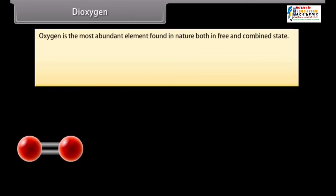Dioxygen. Oxygen is the most abundant element found in nature both in free and combined state. Nearly all rocks, clays and many minerals contain a high proportion of oxygen. Preparation of dioxygen can be done by following methods.